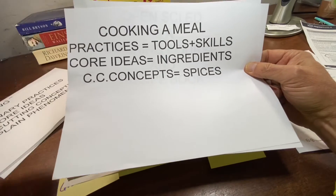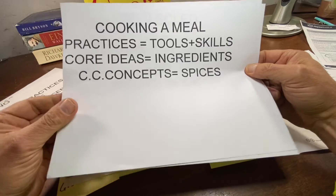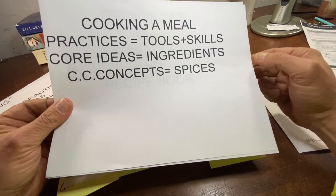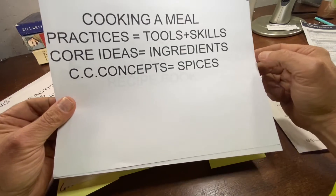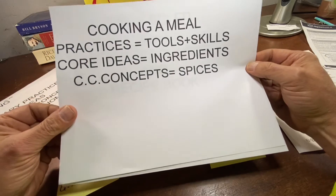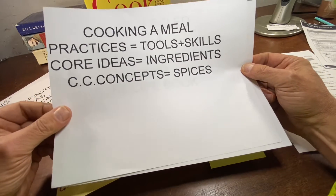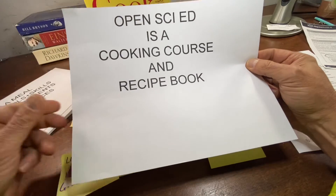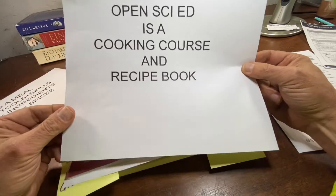It's a bit like cooking a meal. Practices are the tools and skills needed to mix the core ideas — or ingredients — together with some cross-cutting concepts, or spices. That's Krejik's analogy. To do it well, you need not only a recipe book, but a cooking course.